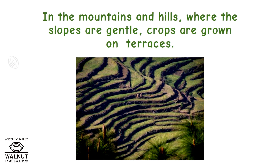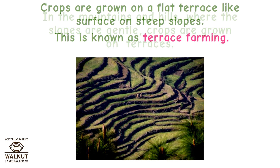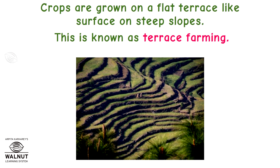In the mountains and hills where the slopes are gentle, crops are grown on terraces. Crops are grown on a flat terrace-like surface on steep slopes. This is known as terrace farming.